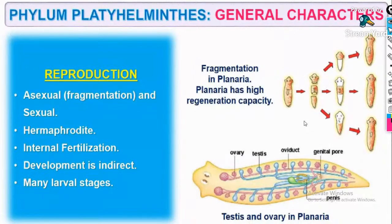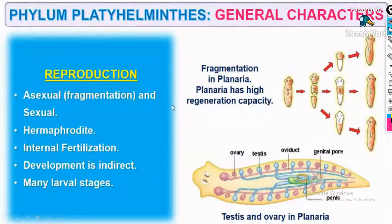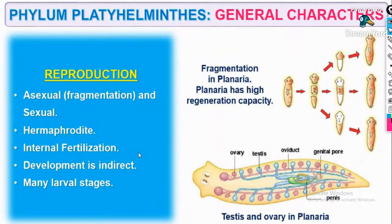Reproduction: it has both asexual and sexual forms of reproduction. Asexual form is fragmentation. Sexual form — they are hermaphrodites. Internal fertilization occurs, development is indirect, and many larval stages are present in case of Platyhelminthes.